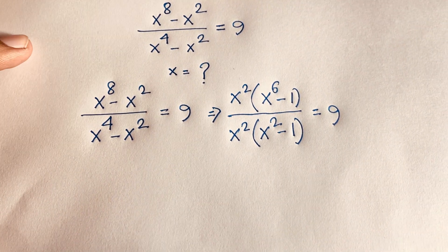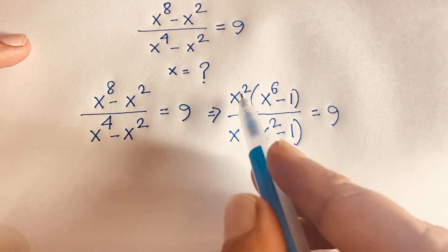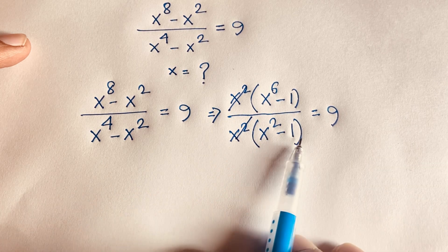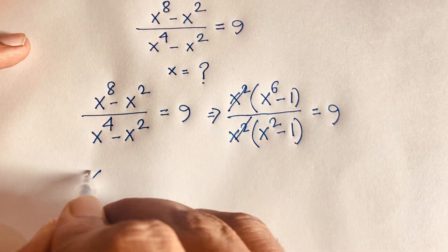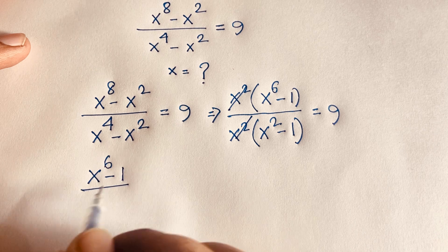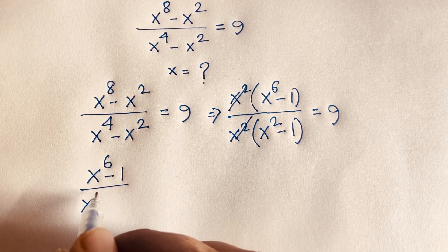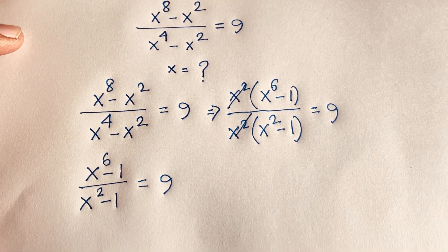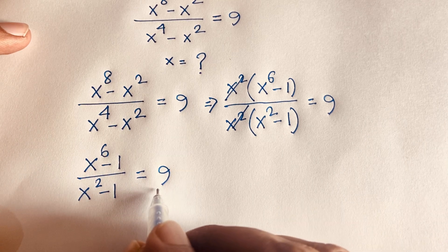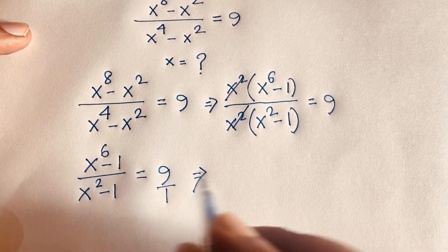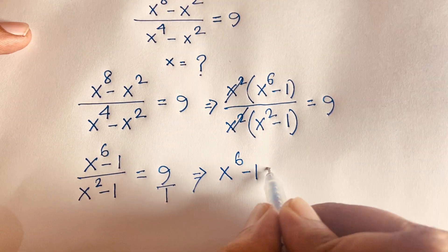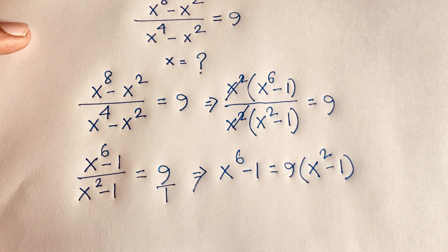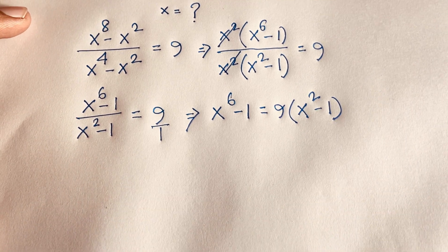Now if we cancel the x² terms, we find (x⁶ - 1) / (x² - 1) = 9. Cross-multiplying, x⁶ - 1 equals 9 times (x² - 1).